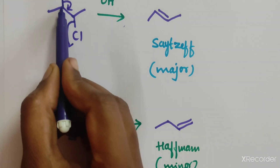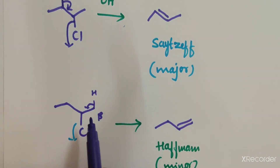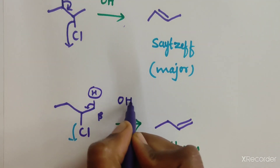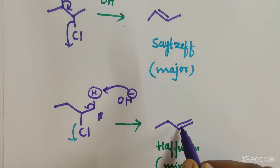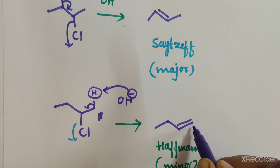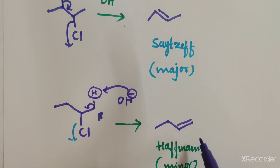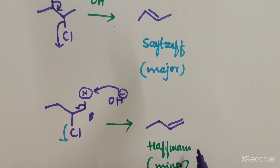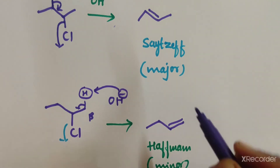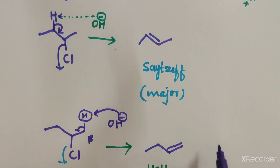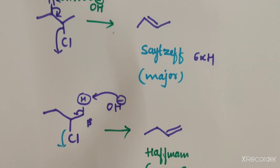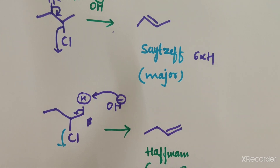The base abstracts one beta hydrogen here, and the double bond forms — this is the Zaitsev product. If the other beta hydrogen is abstracted, we get the Hofmann product. The Hofmann product is the minor product (around 20%) while the Zaitsev product is the major product (around 80%).